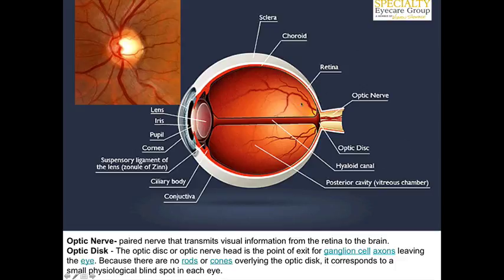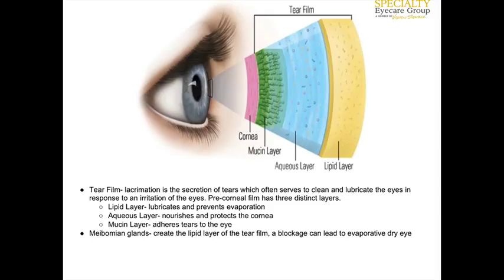In the back of the eye we have the optic nerve, which transmits visual information from the retina to the brain. The optic disc is the point of exit for all of the ganglion cell axons that leave the eye. There are no rods or cones overlying the disc, which creates a physiological blind spot. At the very front of the eye we have the cornea, and in front of that, a mucin-like layer of the tear film, then an aqueous layer, then a lipid layer.